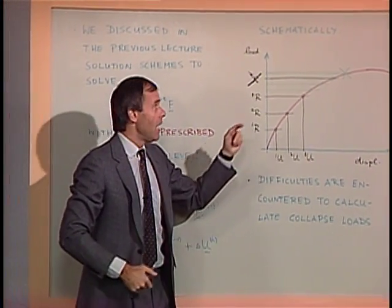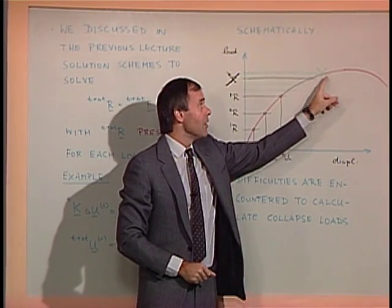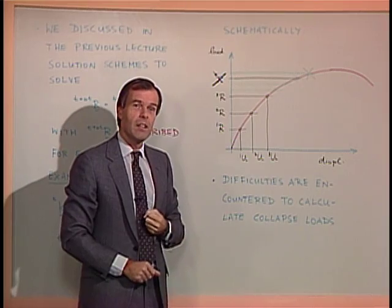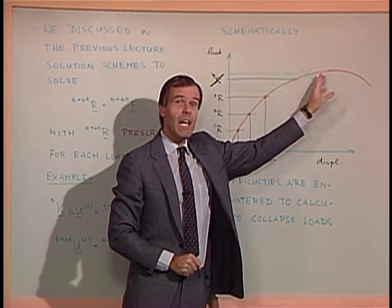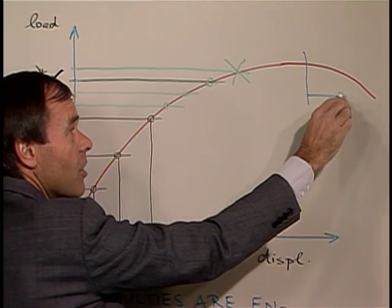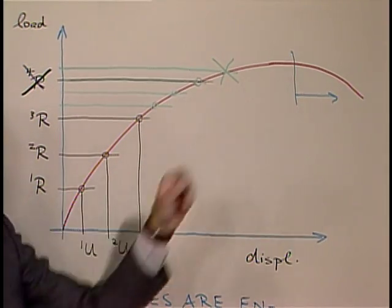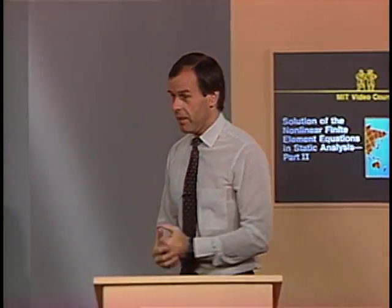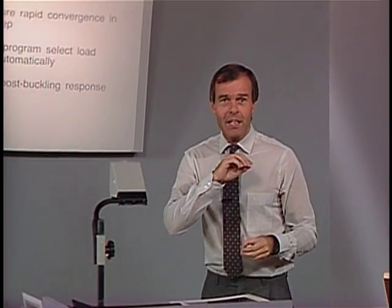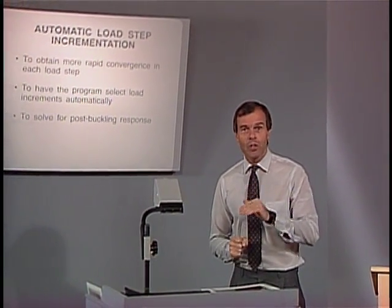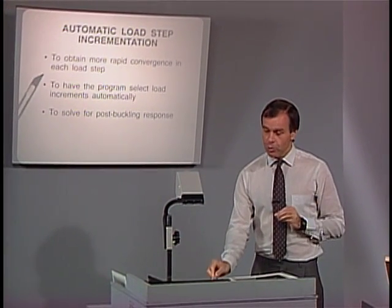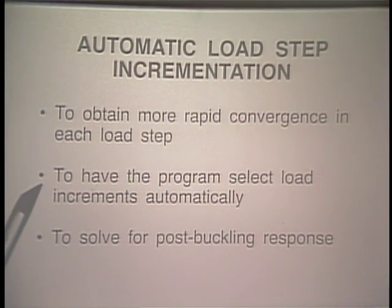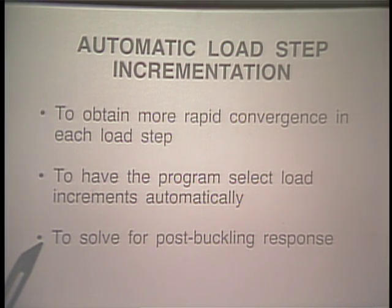If you restart enough and use small enough load steps, you will ultimately get very close to the collapse load. But this is tedious in a practical analysis, and we would like to have an automatic scheme that can directly trace out the collapse load and also go into the post-collapse response — the response beyond the ultimate limit load. The idea is that we want to obtain more rapid convergence in each load step, have the program automatically select load increments, and also be able to solve for the post-buckling response.